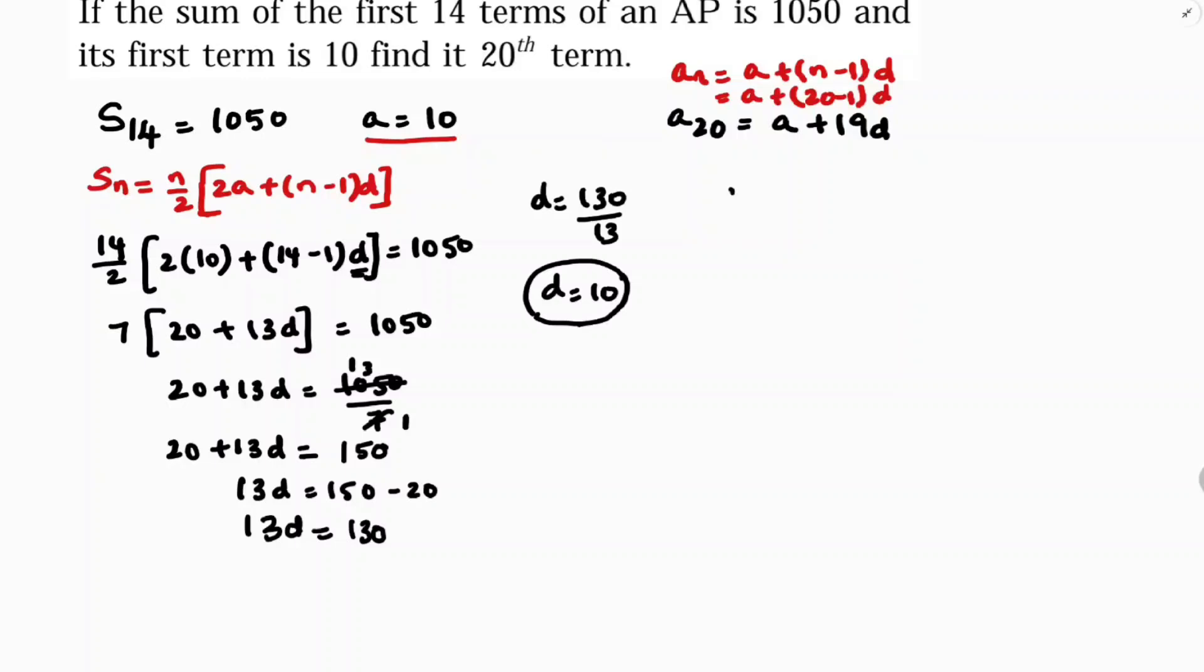Now you need to find A20. A value is given already 10 plus D value is also 10, so 19 times 10.